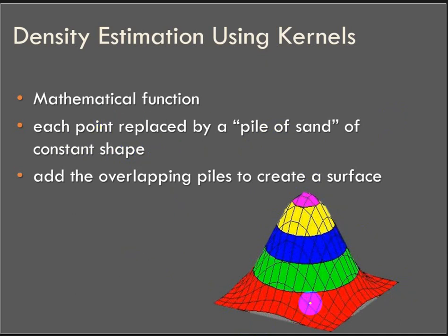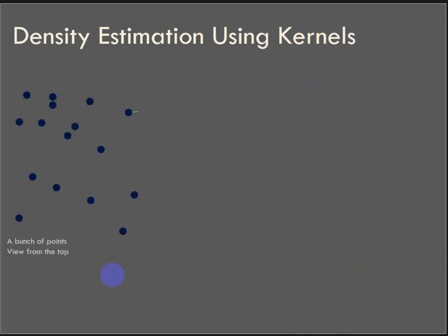So instead of a point location that would just be one discrete XY location with a value associated with it, we can interpolate that value under the area of this three dimensional curve. And that mathematical function is called the kernel.